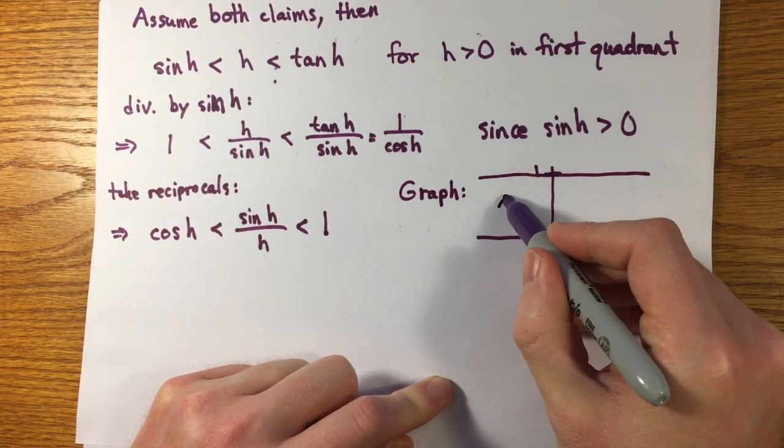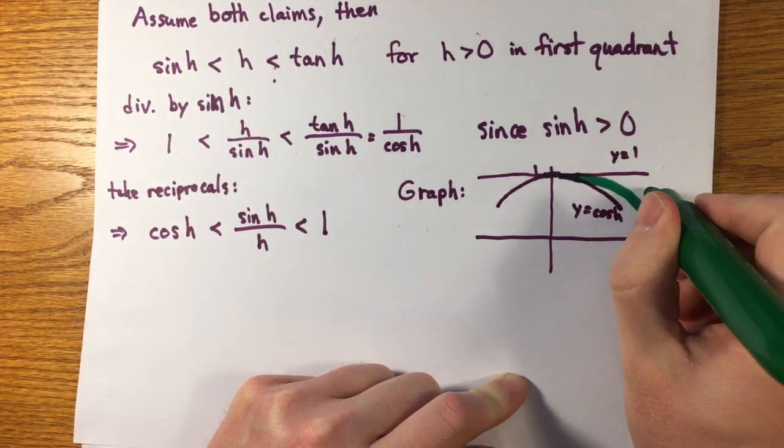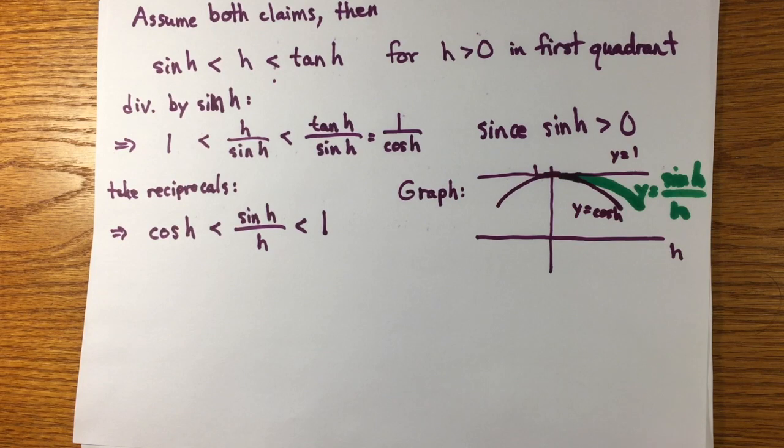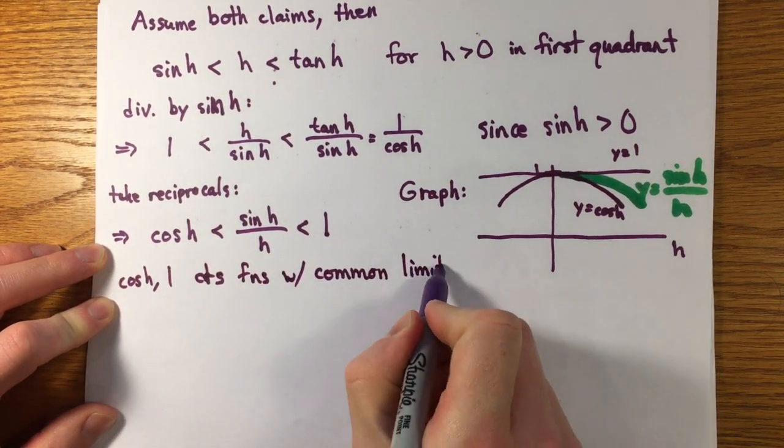Here's a graph of these functions that illustrates this inequality. The function sine h over h is forced to lie between two continuous functions with common limit 1 at 0, so the limit exists and is equal to 1 by a result usually called the squeeze theorem. For h less than 0, the argument is entirely similar.